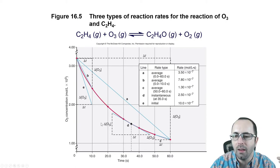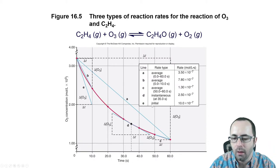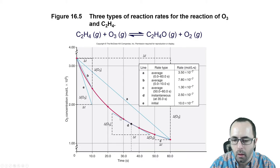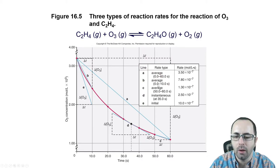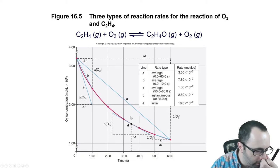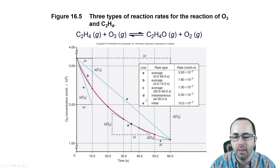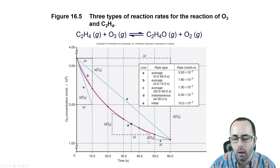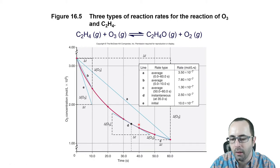For that reason, we have three types of ways to state the reaction rate. We can state the initial rate — the rate at the very beginning. Or we can state the instantaneous rate at one particular specific time. Or we can state the average rate over a period of time, which is often easier. Point A on the graph represents the average reaction rate over the total 60-second period. The reaction was going faster than this at the beginning and slower at the end.